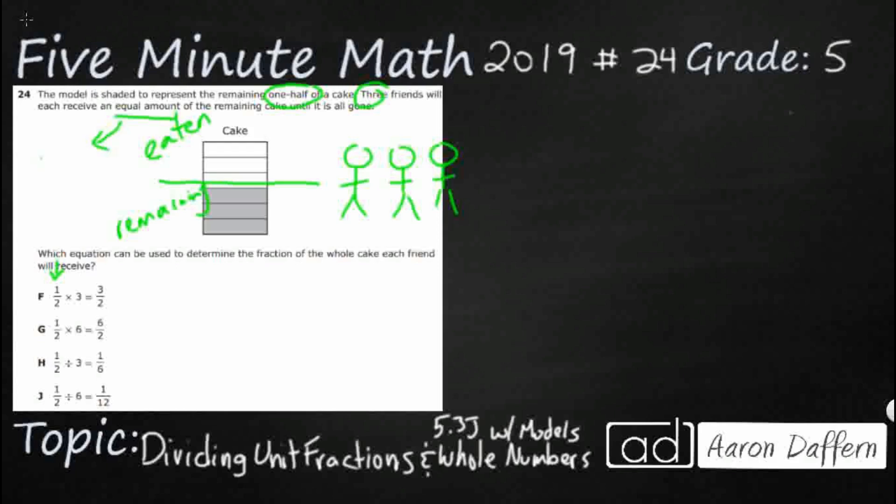Whenever we see equal groups, or equal amounts, that gives us a big clue that we are dealing with multiplication or division. Those are very important for our multiplication and divisions, having those equal groups. If they are unequal, then it is not really multiplication or division. So, we need to find an equation here that is going to determine the fraction of the whole cake that each friend is going to receive.